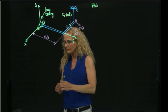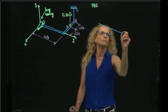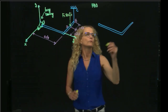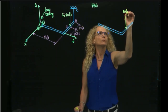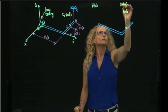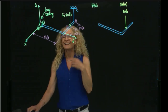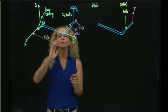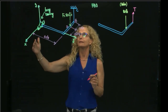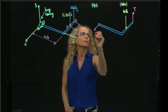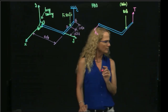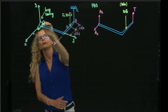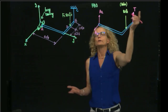Now I can draw the free body diagram. I reproduce the beam and put the active forces - I only have one, which is 80 pounds. Then I put the reactive forces: I have a tension from the cord, and from the long bearing at point A, which restricts displacement in X and Z, I have a force in Ax and a force in Az.